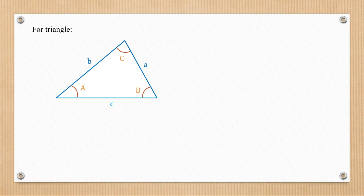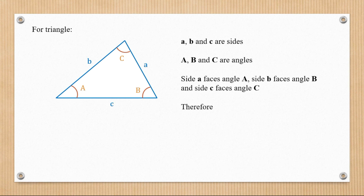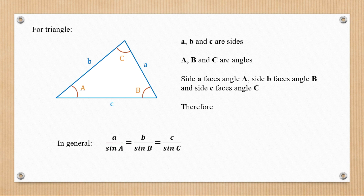Let's look at this triangle. Small a, b, and c are the sides; capital A, B, and C are the angles. Side a faces angle A, side b faces angle B, and side c faces angle C. So therefore the sine rule states: a/sin A = b/sin B = c/sin C. We compare the opposite sides with the angle that each side is facing, and this is true for all triangles.